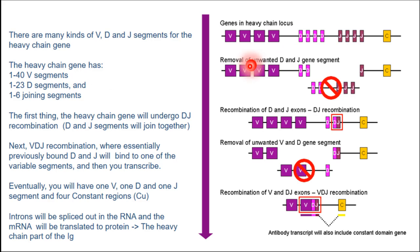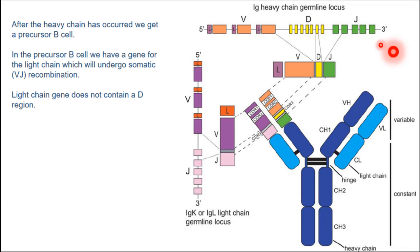There are around 40 V segments, 23 D segments, and one to six J segments. You have approximately forty different variable segments and you choose one of them, one of the D segments, and one of the J segments, which will be combined with a C region. The number of combinations is astronomical, giving rise to millions of different variable regions. And the same story — the good news — applies for the light chain. The same concept of somatic recombination occurs, except there is no D segment in the light chain.